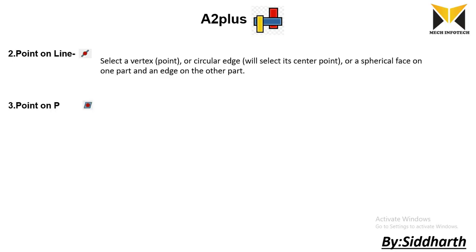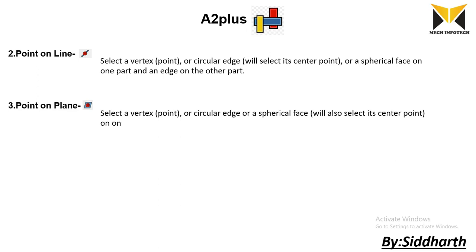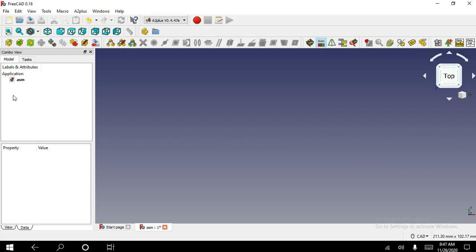Now you can drag this part on the other part. In this constraint we can select vertex, circular edge, or spherical face on one part and a plane on the other part. Now we will solve some examples in FreeCAD. I am going to open the first part.